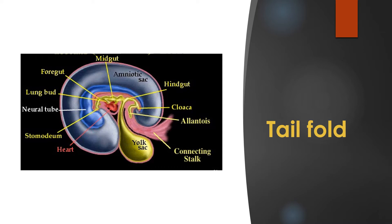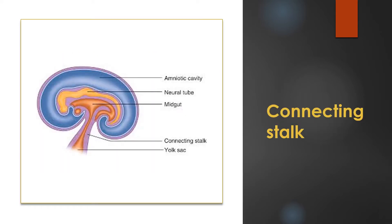When the tail fold occurs, here this is the tail fold. When the tail fold occurs, at the meantime, the yolk sac is enclosed and the parts such as the allantois and the connecting stalk come anteriorly. Here when the fold occurs, you can see the allantois and the connecting stalk — both will come anteriorly. So during the tail fold, these two major structures are going to come anteriorly.